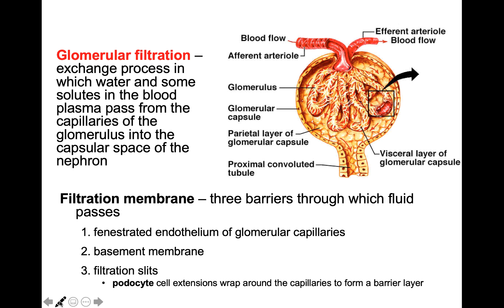The glomerulus performs a process called filtration. Filtration is when blood enters through the afferent arteriole, goes into the glomerulus — which is the name of the capillary bed — and it filters solutes and water out of that capillary bed into the glomerular space. This space collects all that filtrate and brings it down into the first part of the tubule called the PCT.